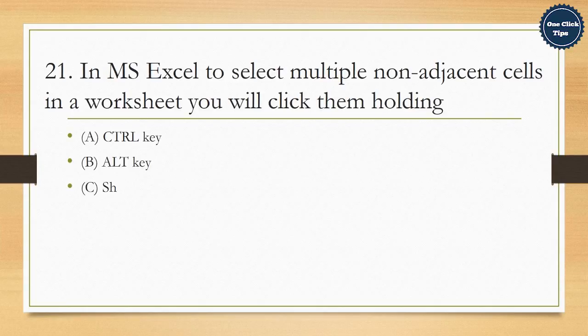21. In MS Excel, to select multiple non-adjacent cells in a worksheet, you will click them holding A. Ctrl key, B. Alt key, C. Shift key, D. Ctrl plus Shift key. The correct answer is A. Ctrl key.